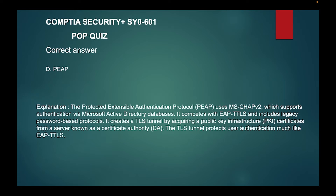The correct answer is D, PEAP — the Protected Extensible Authentication Protocol. PEAP uses MS-CHAP version 2, which supports authentication via Microsoft Active Directory databases. It competes with EAP-TTLS and includes legacy password-based protocols. It creates a TLS tunnel by acquiring a public key infrastructure certificate from a certificate authority.